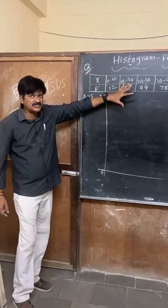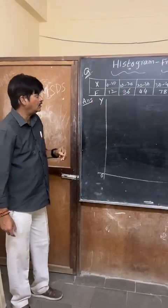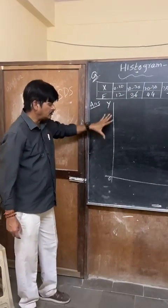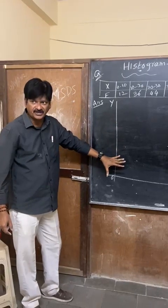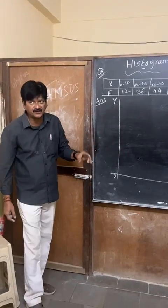This is a continuous series. It looks like a bar diagram. Take a graph paper — in the exam, they will give you the graph paper.